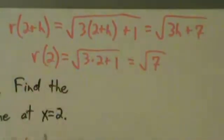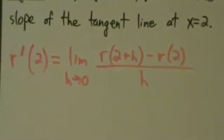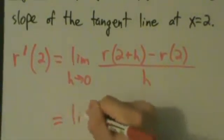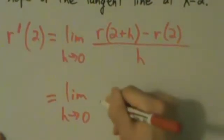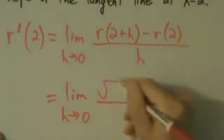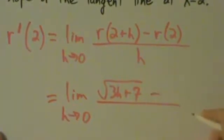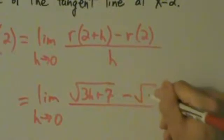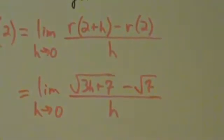All right. So we have these now. So let's go ahead and take these and put them back into here. So this equals the limit as h goes to 0 of root 3h plus 7 and then minus root 7, all divided by h. All right? So what do we do from here?